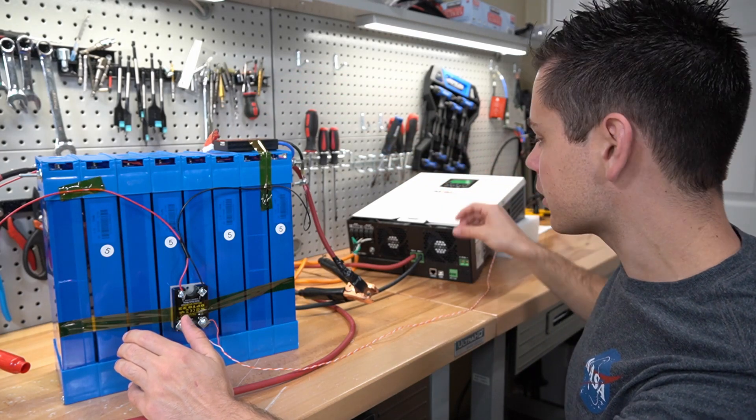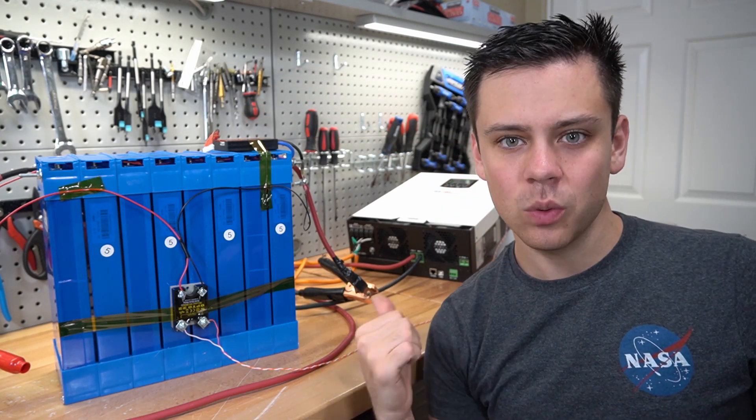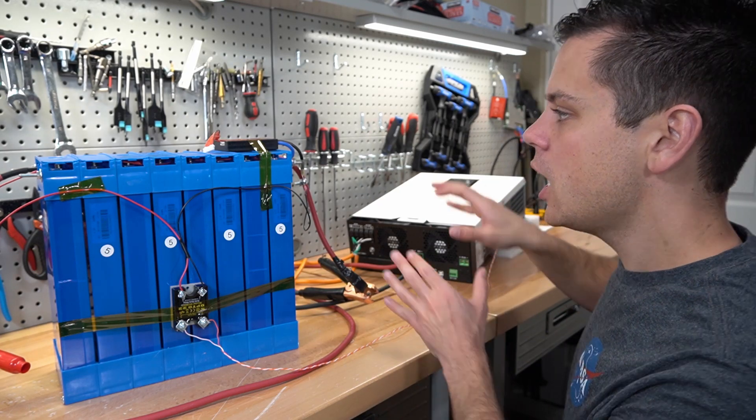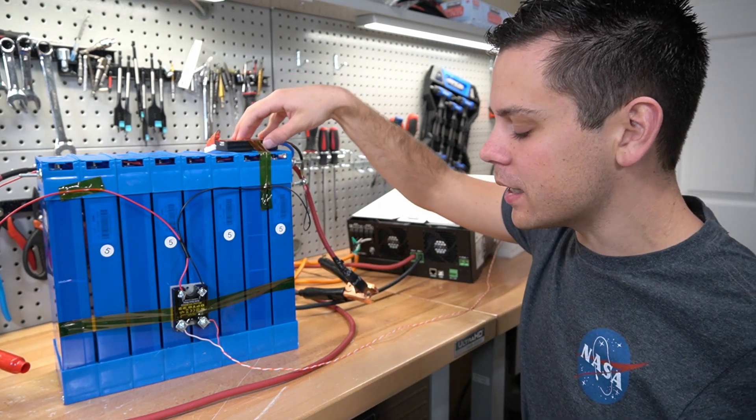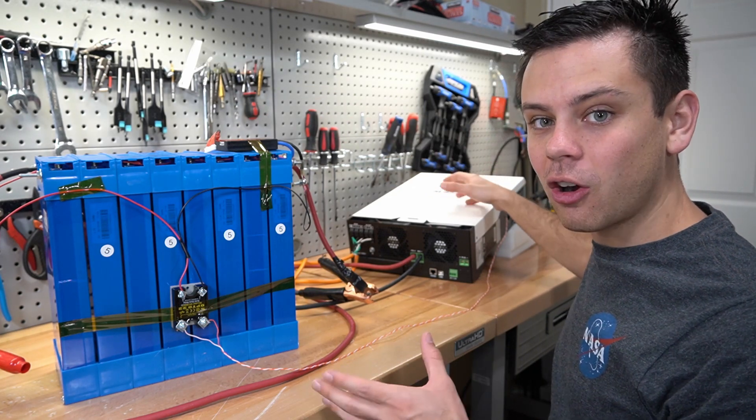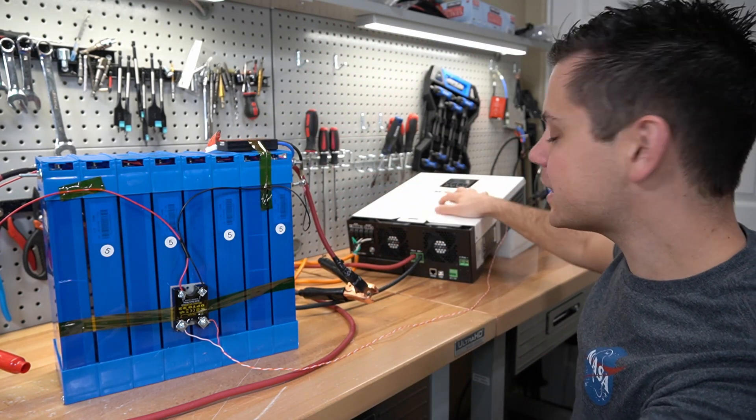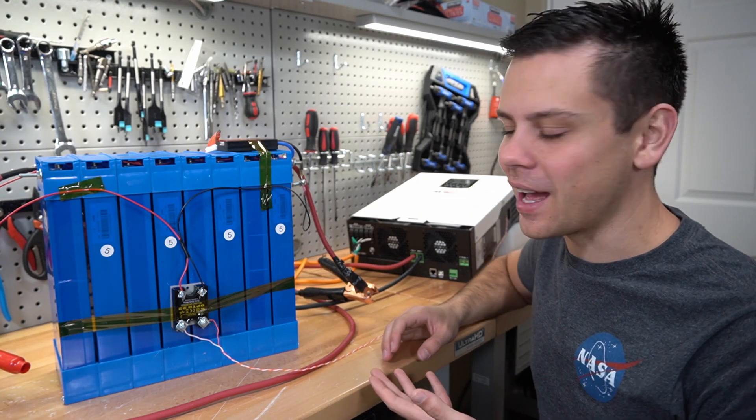It will turn off the inverter. That small clicking was the inverter turning off, but the cooling fans like to stay on for a while. But that means that this small BMS is controlling this large inverter. And this is only a 60 amp BMS. And this inverter can push way more than that. It's like double that.